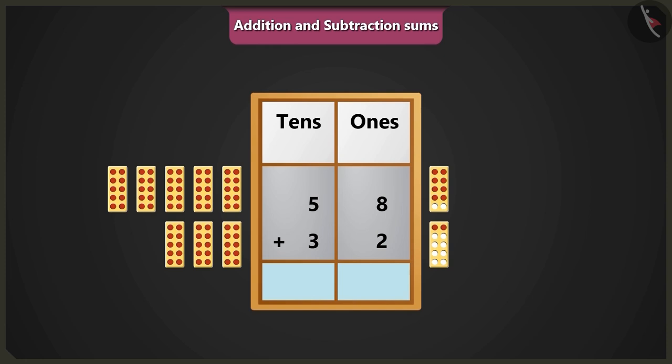So now if we will add numbers 8 and 2 of the box of one's unit, then after 8, there will be 9 and 10. There are 0 ones and 1 tenths in 10. So we will put 0 in the place of ones and we will carry over 1 in the place of tenths.